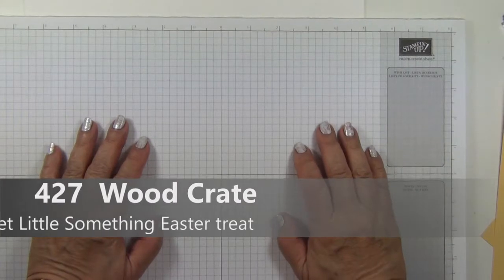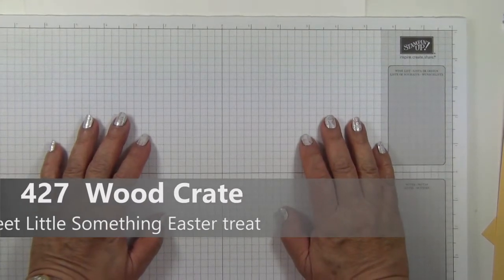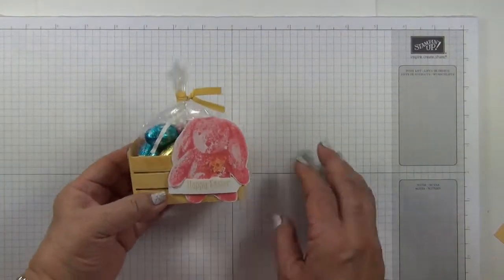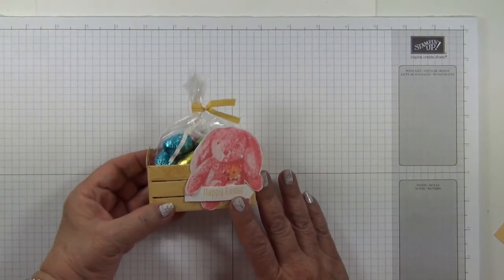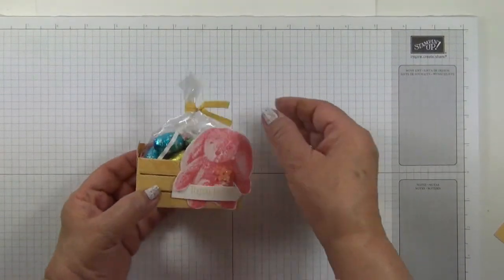Hi, I'm Elaine Harding. Welcome to my blog.stampwithelaine.com. I'm revisiting something from the annual catalogue using the wood crate for my Easter eggs.